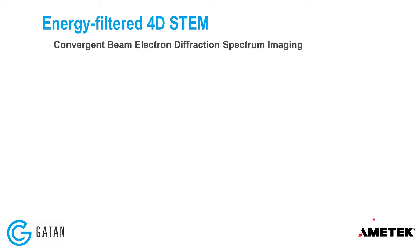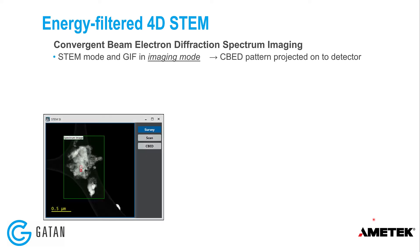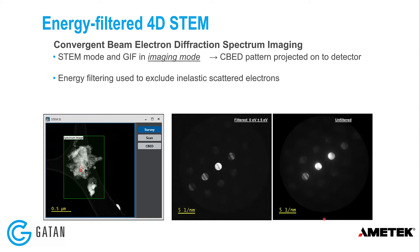4D STEM is convergent beam electron diffraction done in spectrum imaging. In STEM mode, the GIF is in imaging mode, so we're looking at a convergent diffraction pattern on the detector. Energy filtering is used to exclude inelastically scattered electrons, which improves contrast and diffraction spot sharpness, aiding interpretation of the diffraction data.